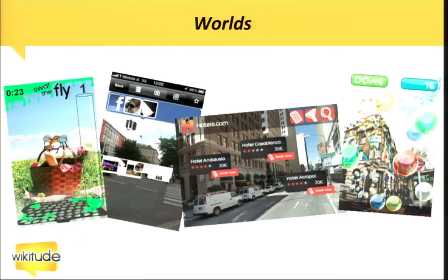Here are a few use cases we or our partners developed — just a small subset, but I'd like to explain a few concepts. First up is a game: a fun little game where a fly is put into the reality around the user and you have to look for the fly. Once you have it in the field of vision, a swatter comes up and smashes the fly, and you get points for each smashed fly. All the game graphics — the swatter and that stuff — are done in HTML5 using the canvas.